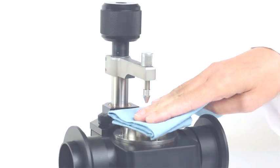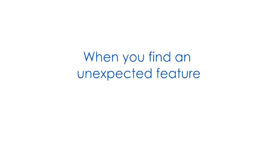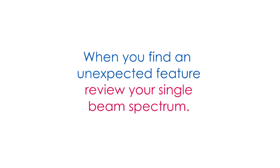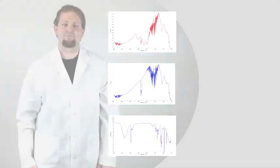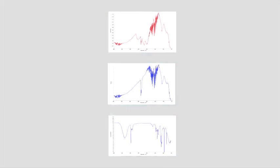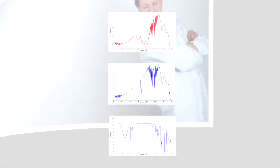When you find an unexpected feature in your spectrum, review your single beam spectrum. It's a good practice to save the background spectrum along with the sample spectrum. This feature may be selected in the FTIR software.